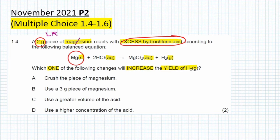At the end of the reaction, when the reaction is complete, all of the magnesium will be used up but we will have hydrochloric acid left over. They ask which one of the changes will increase the yield of the hydrogen gas.